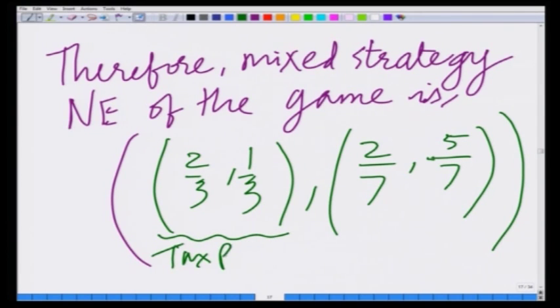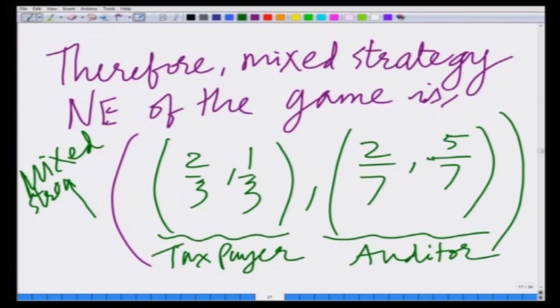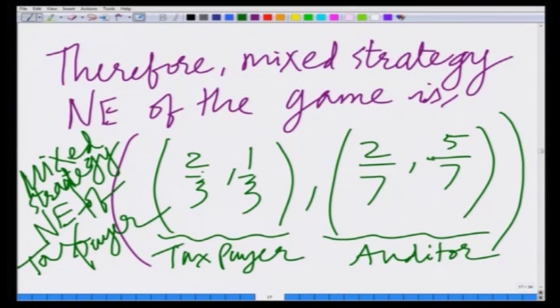The mixed strategy Nash equilibrium of this game is: for the taxpayer, the mix strategy is (2/3, 1/3), and for the auditor, the mix strategy is (2/7, 5/7). This means 2/3 of individuals are honest taxpayers, 1/3 are cheating, and the auditor randomly audits 2/7 of tax forms and does not audit 5/7. I hope you have been able to appreciate this interesting application of mixed strategy Nash equilibrium to the population of taxpayers. We will stop this module here and continue in the next module. Thank you very much.